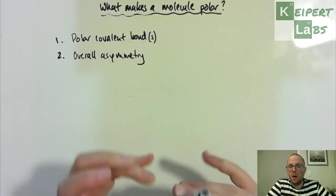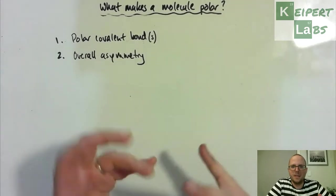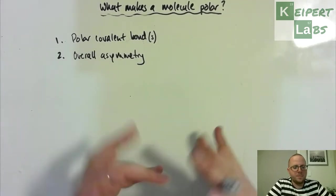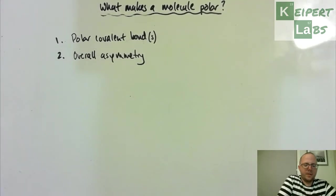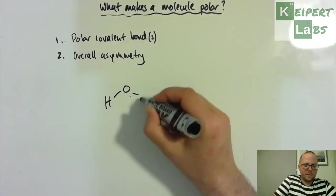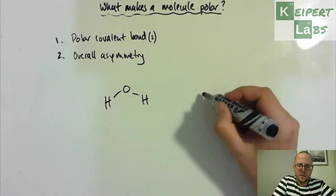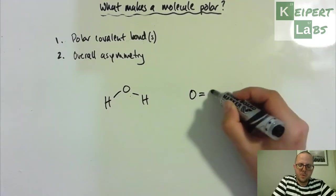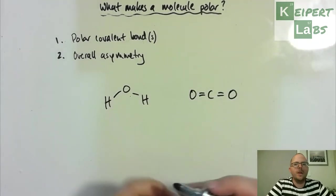And then the second thing that we need is overall asymmetry. When we look at the molecule as a whole, there is an imbalance in the electron cloud. So let's have a look at water, and then we're going to look at carbon dioxide, which looks like this.